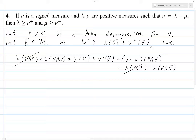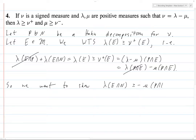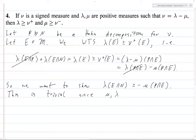So we want to show that λ(E∩N) is greater than or equal to negative μ(E∩P). This is trivial, because μ and λ are both positive measures. So obviously a positive thing is going to be greater than or equal to negative a positive thing. And so we're done.